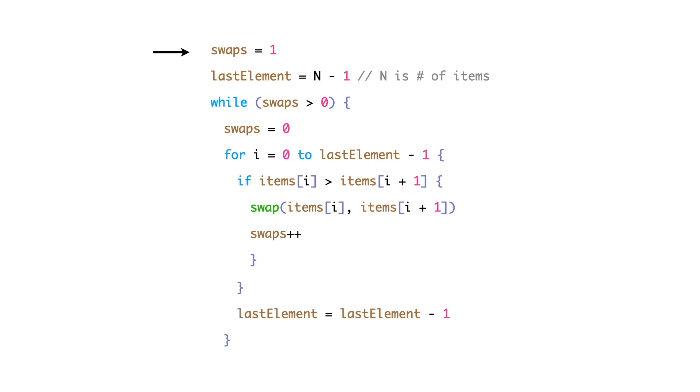It is initialized to 1 to enter into the while loop. The variable last element is used to mark the end of the unsorted partition. It is initialized to n-1.